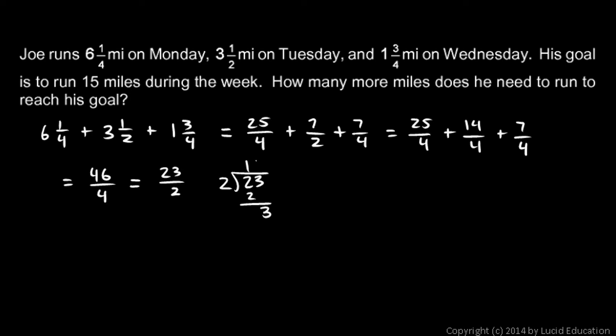I'm going to have one, I subtract, I just get a three there and another one, subtract I get a one. So 11 remainder 1, so that's 11 and a half miles that he's run. That's how much he's run so far. He wants to run 15 miles total during the week.